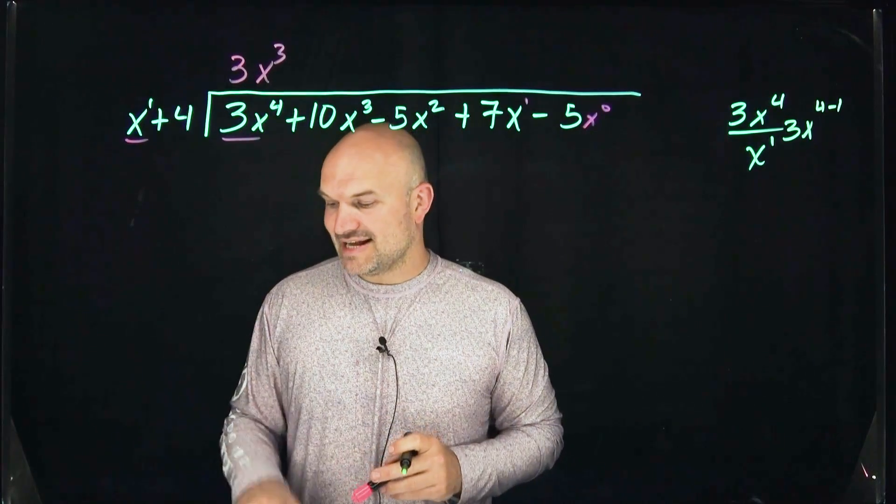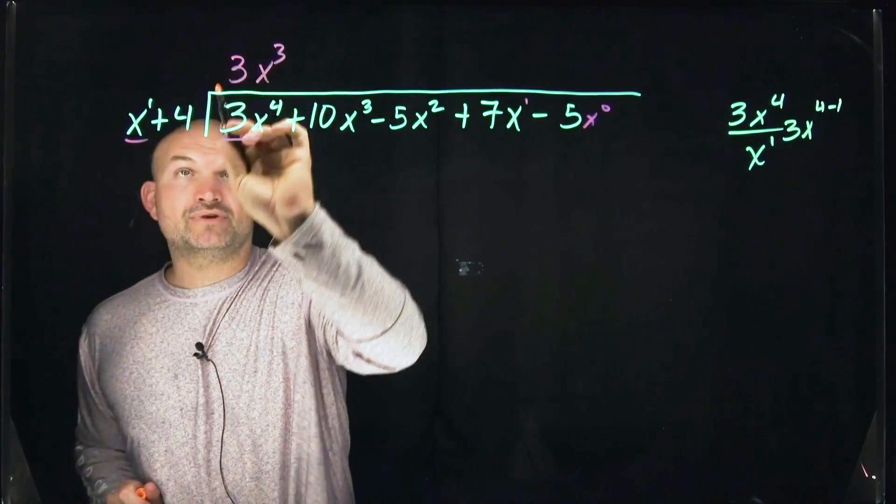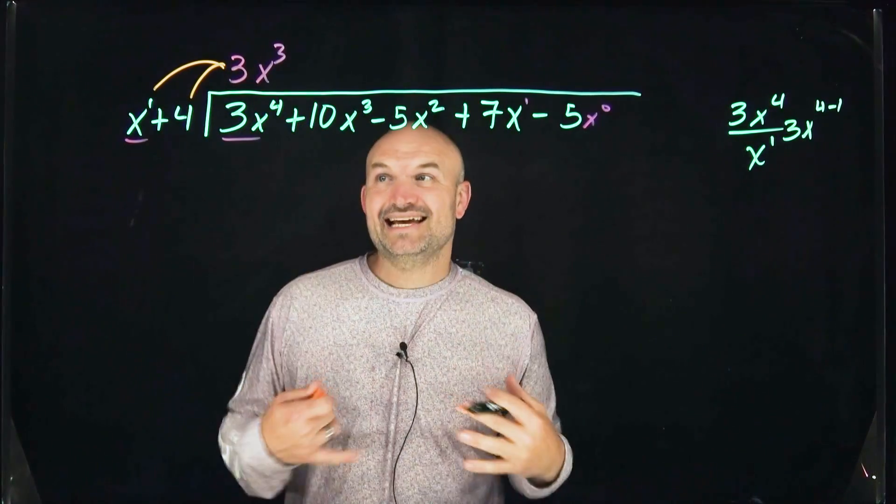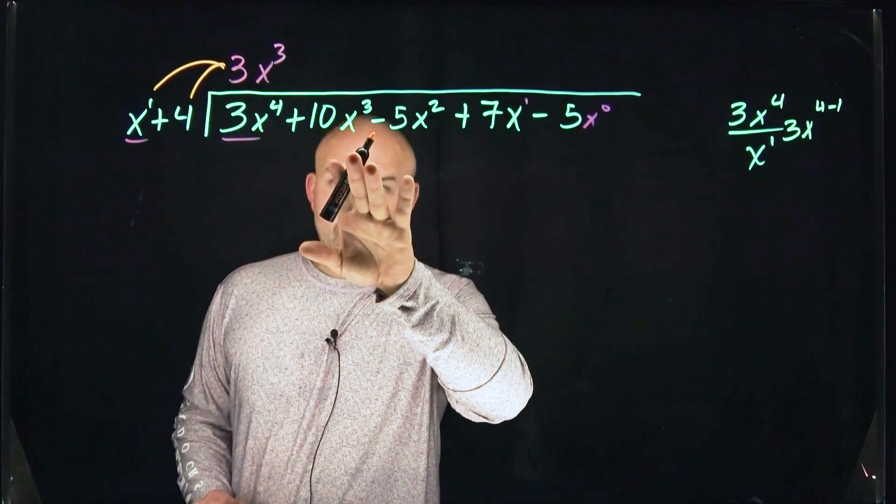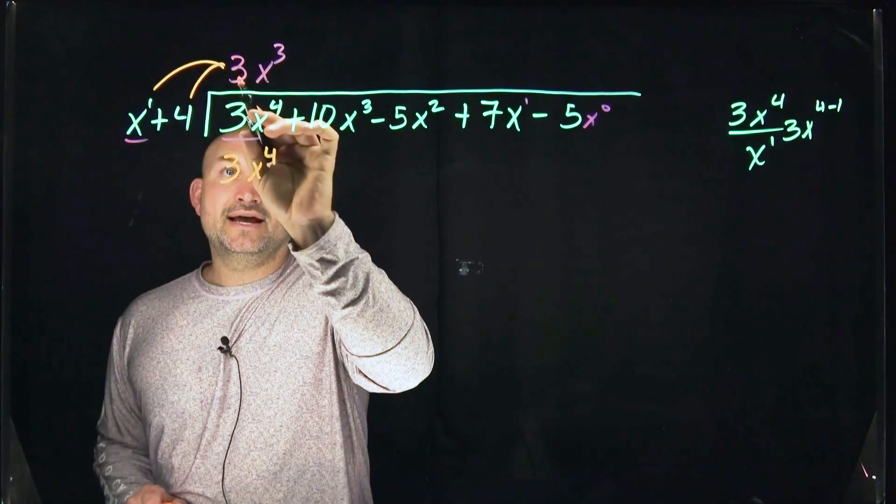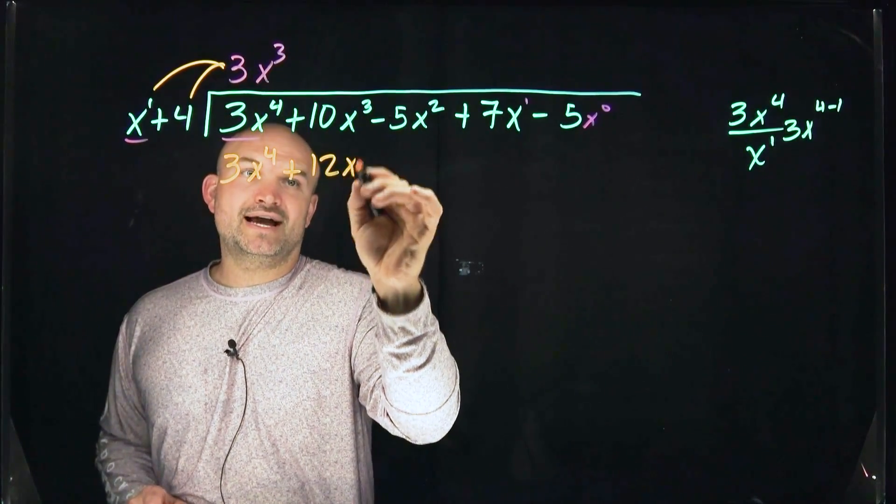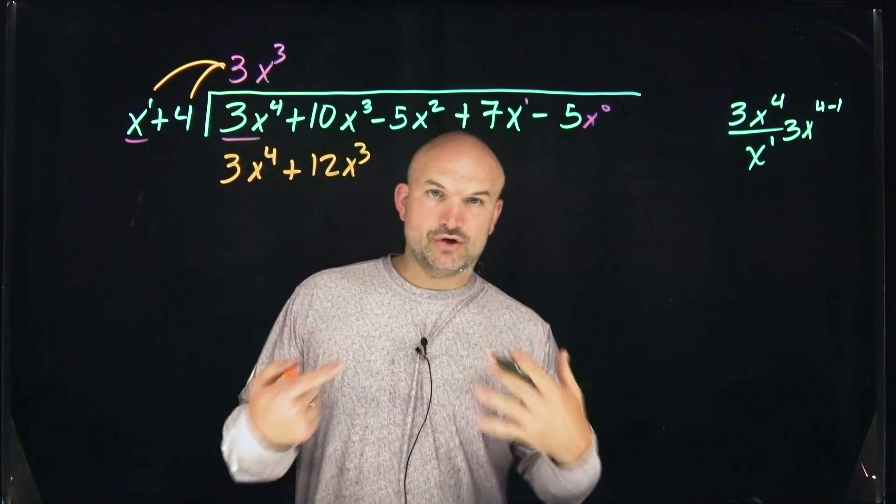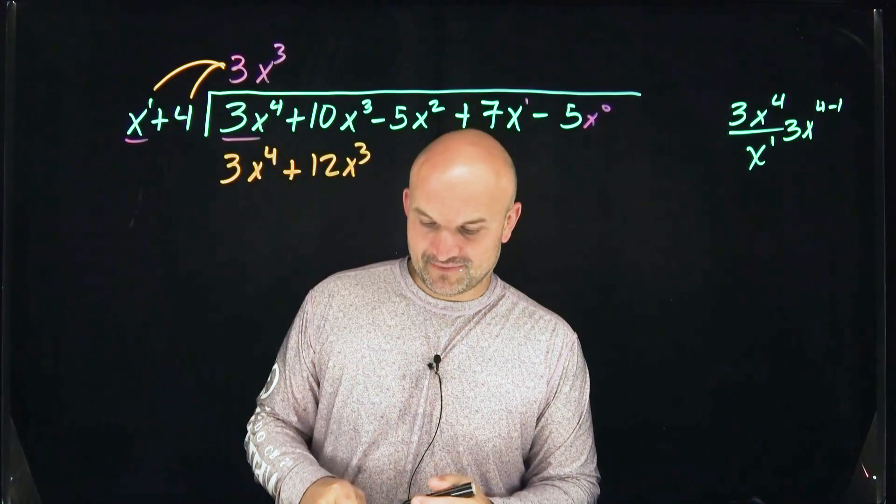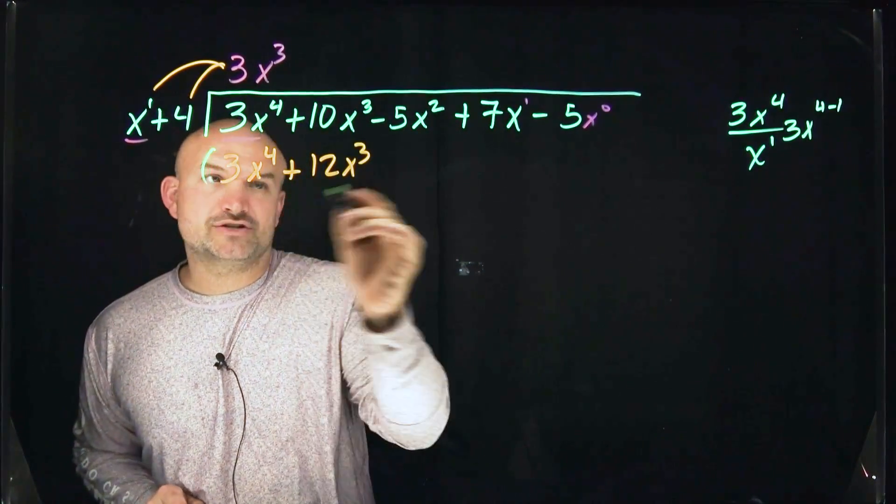Once we find that first answer in our quotient, we're going to take that term and multiply it by both terms of our divisor. Then we're going to take that answer and write it below. So 3x cubed times x is going to be 3x to the fourth. 3x cubed times four is going to be a positive 12x cubed.